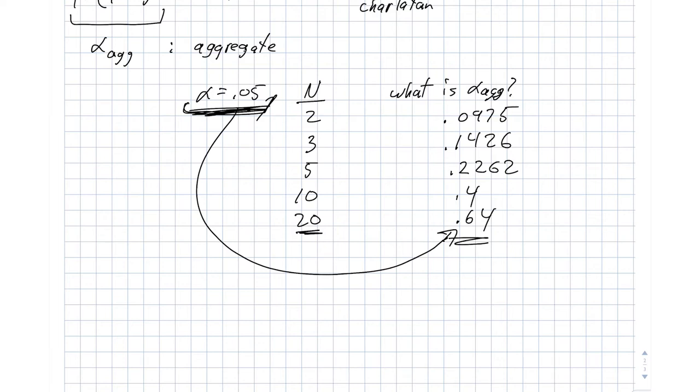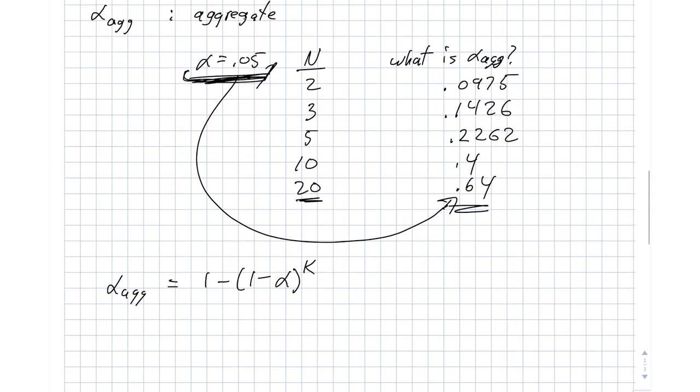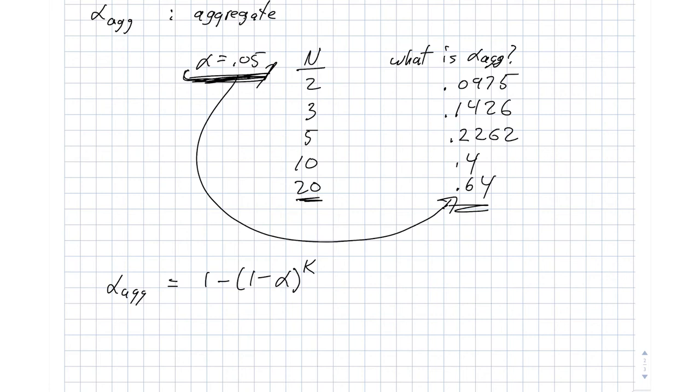So what we really want to be able to do here is set alpha aggregate to something, and then compute what our alpha is for the individual tests. So that's just a little bit of algebra. So this is alpha ag is 1 minus 1 minus alpha to the K. So we can rearrange this, and it becomes alpha is equal to 1 minus 1 minus alpha ag to the 1 over K. So again, this gives us a means of saying, I want my aggregate decision to be correct with some probability, and this will tell me how I can judge the individual brokers.